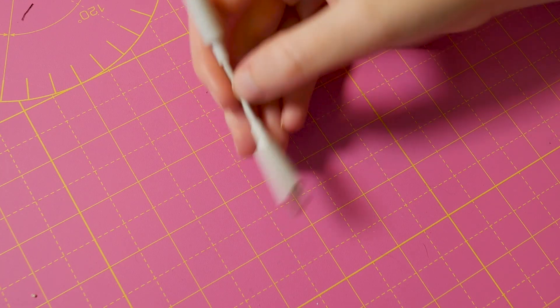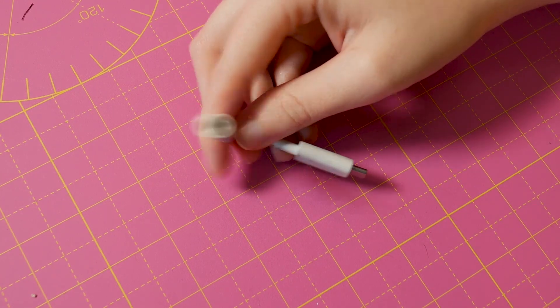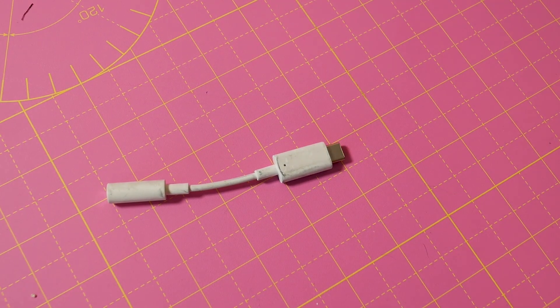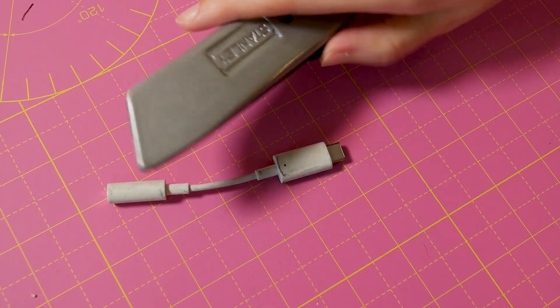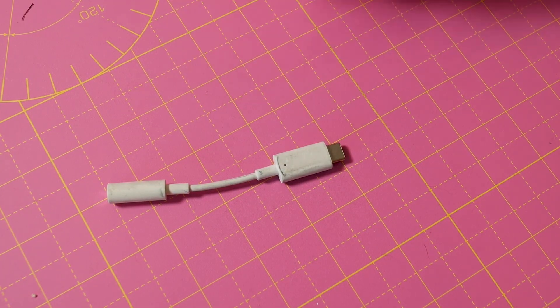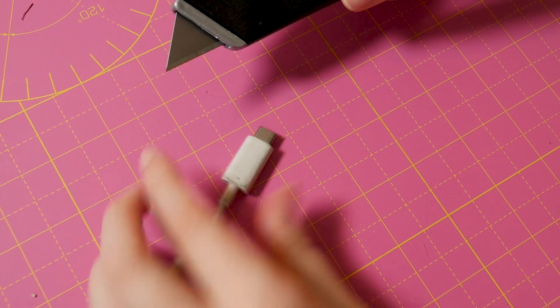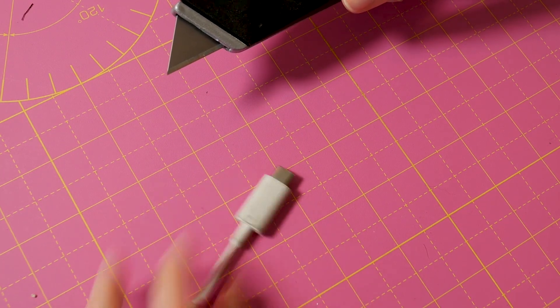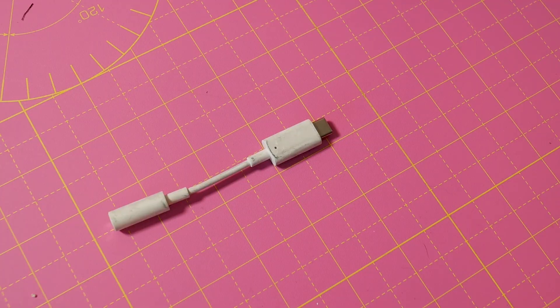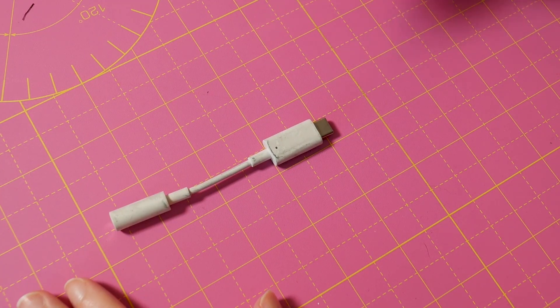Alright, so this is the adapter, USB-C to headphone. And basically the way we'll approach this is we're just going to kind of slice open the housing, just kind of see what's going on and kind of go from there. So let's begin.